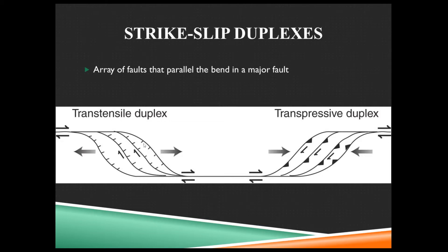Within those restraining bends or releasing bends, we get an array of normal or reverse faults — not a single one — and so they're called duplexes. We can get a transtensile duplex where it's a series of normal faults accommodating that extension, or a transpressive duplex which is a series of reverse faults accommodating that compression.